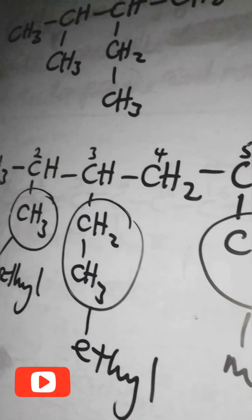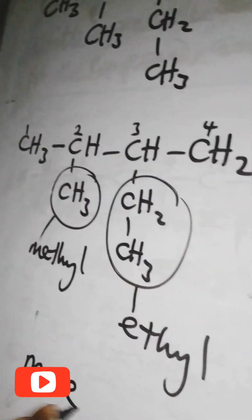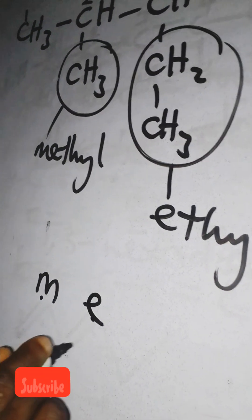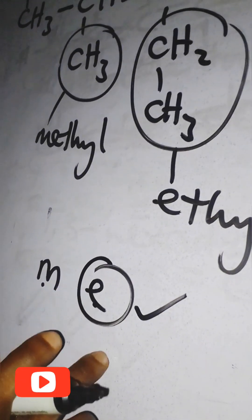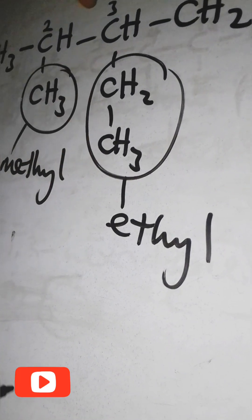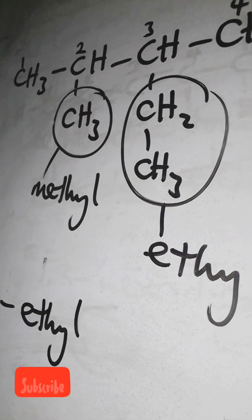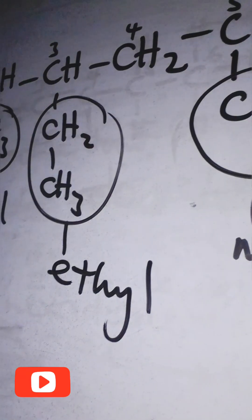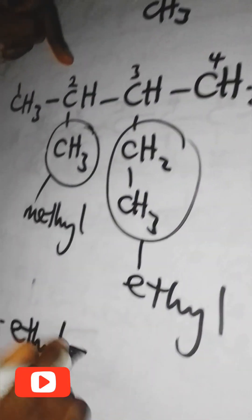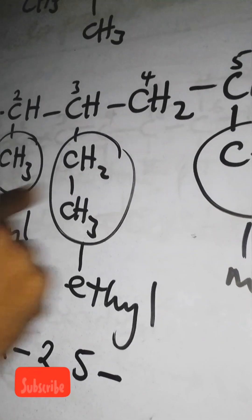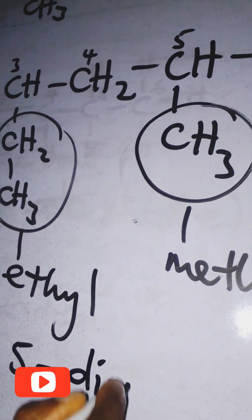Now, are we going to say 2,5-dimethyl-3-ethyl? Let's check alphabetical order: methyl starts with M, ethyl starts with E. Alphabetically, E comes first, so you name the ethyl first. The ethyl is at the third carbon, so you write 3-ethyl. Then the two methyl groups are at the second and fifth carbons, so you write hyphen 2,5 — and since there are two methyl groups, it's dimethyl.